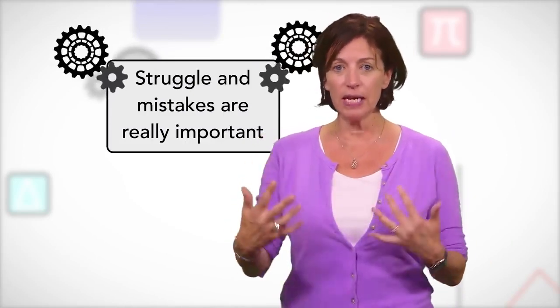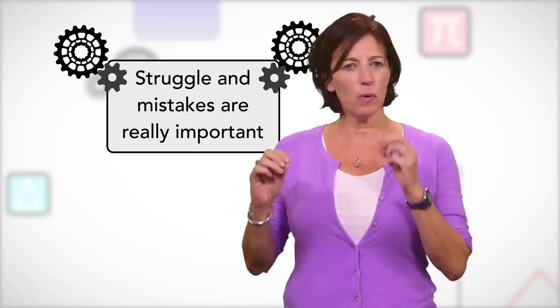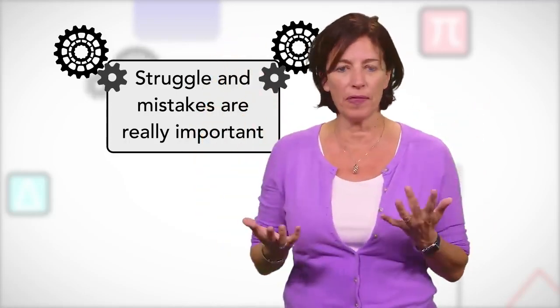Something else we now know from brain research is that struggle and mistakes are really important. A research study found that when people made mistakes, their brains grew more than when they got work right. Surely they had to work through the problem and get it right in order for their brains to grow. Actually, no. The study found that there were two possible synapse firings. The first comes when you make a mistake, and the second one comes if and when you're aware you've made a mistake. But how can your brain grow if you don't know you've made a mistake? Well, the best knowledge we have on this is your brain grows when you make a mistake because it's the time that the brain is challenged and is struggling, and those are the best times for brain growth.